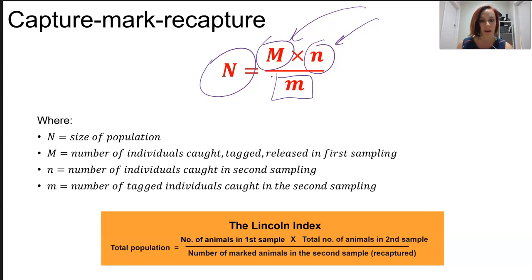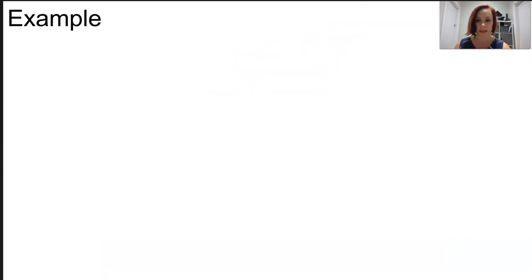For a precise population estimate, this requires about 20 percent of the population is marked, so that means sometimes scientists have to assume and take huge samples in that first one. Marking can sometimes be really difficult for small animals as well.